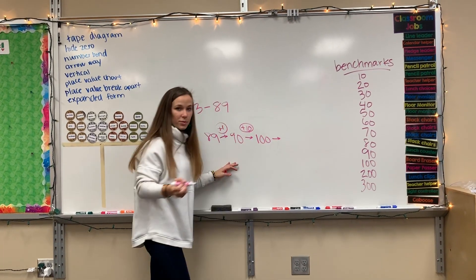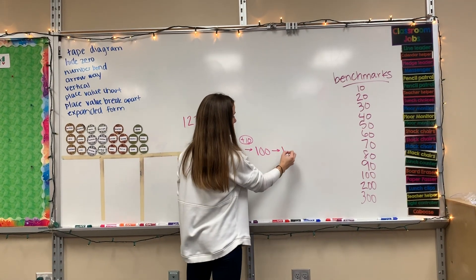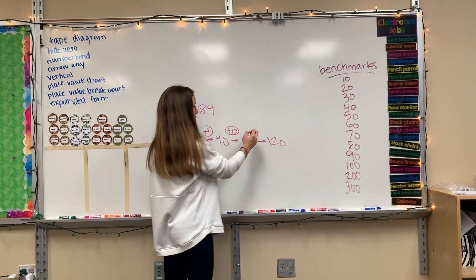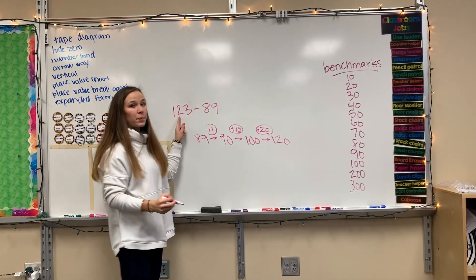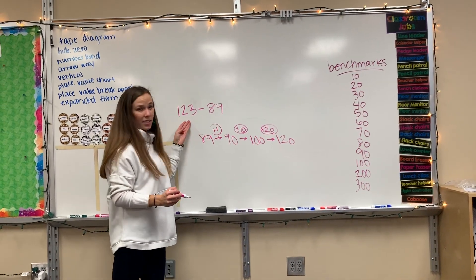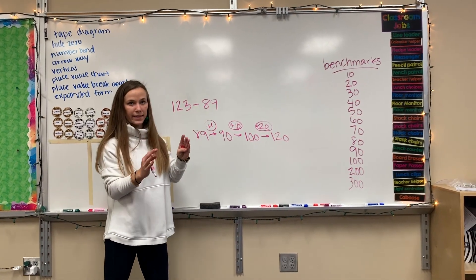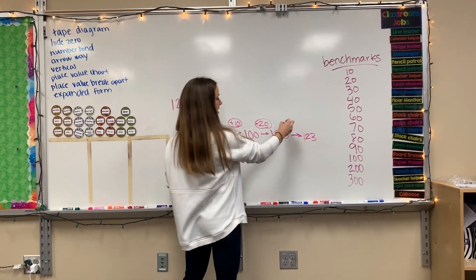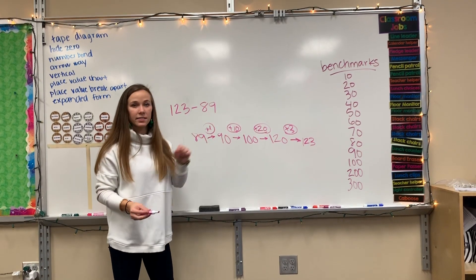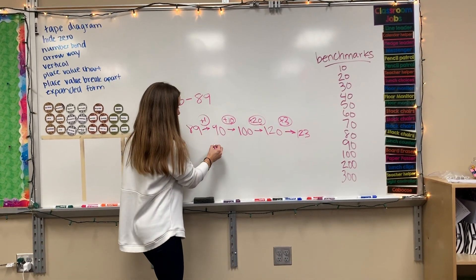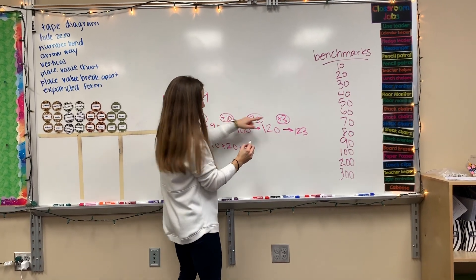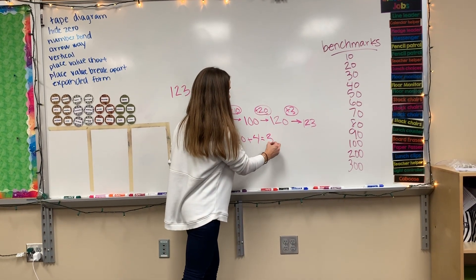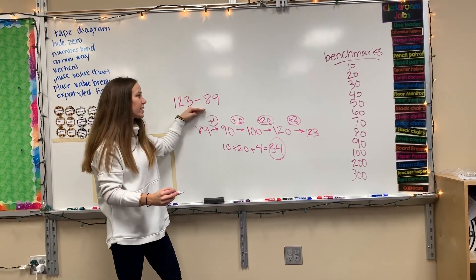If you want to skip one of the tens, you can say my next benchmark from 100 could be 120, because it's still a multiple of 10. To get from 100 to 120, I have to add two tens, which is 20. But I can't stop yet because my goal is to end at 123. So now I need to add 3 more to reach 123. Then you take all of the numbers you added and add them together: 1 plus 10 plus 20 plus 3. We can simplify that — 10 plus 20 plus 4 is 34. So 34 would be my answer to solve 123 minus 89.